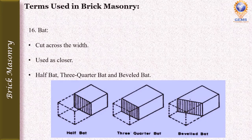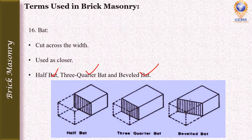Next is bat — a portion of brick cut through its width is known as a bat, and it is also used as a closure. Bats are divided into different types: half bat, where half of the brick is cut off; three-quarter bat, where three quarters of the brick is kept and one quarter is cut off; and beveled bat, where from the three-quarter position, an angle cut is made.